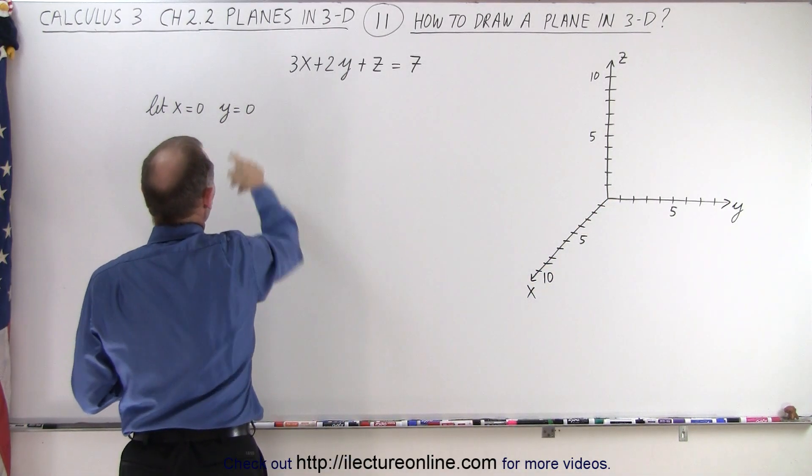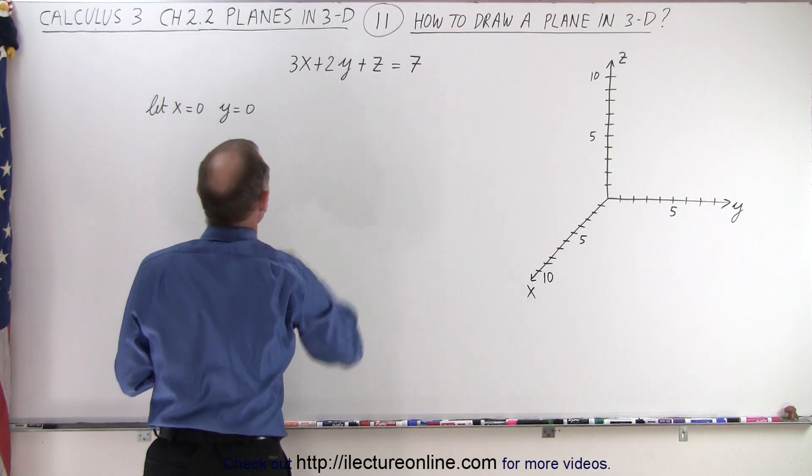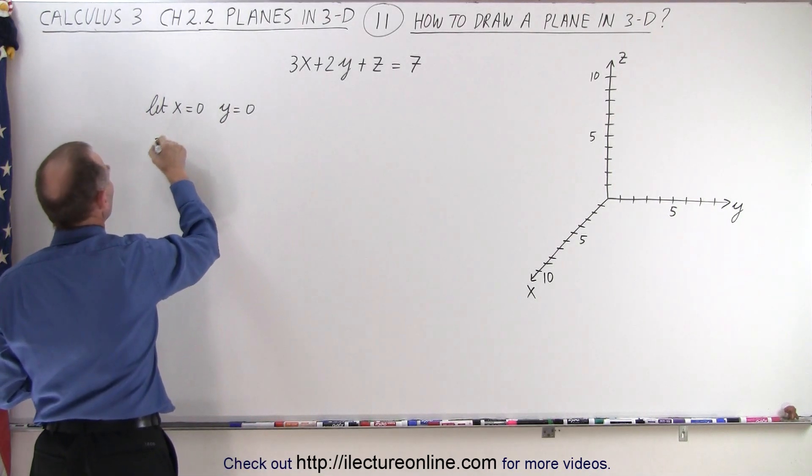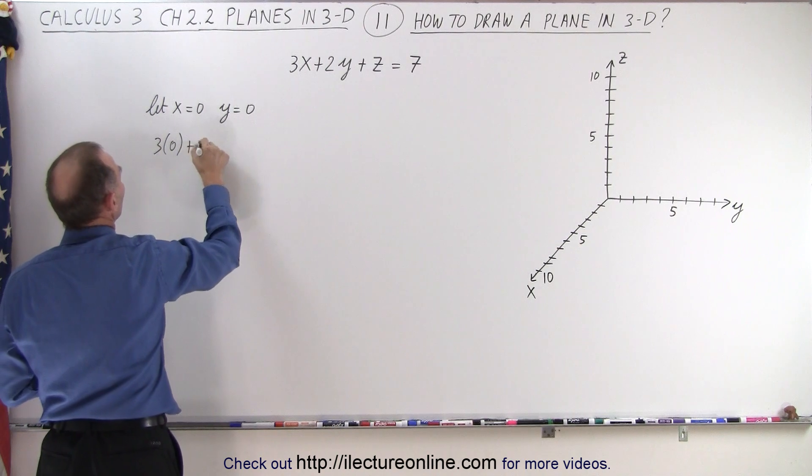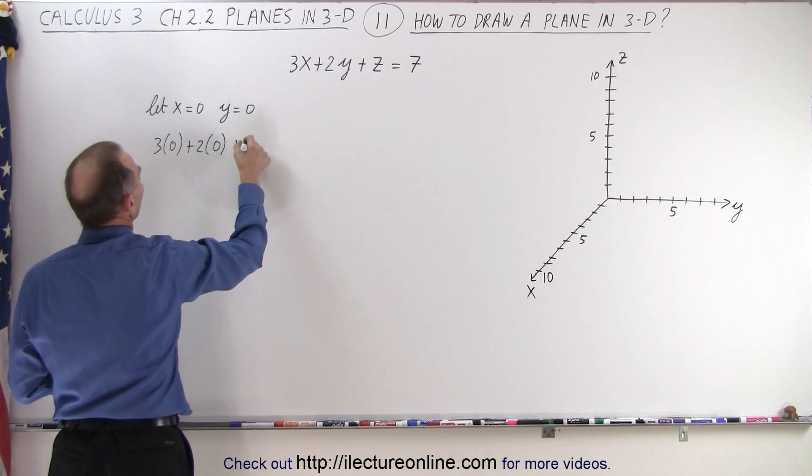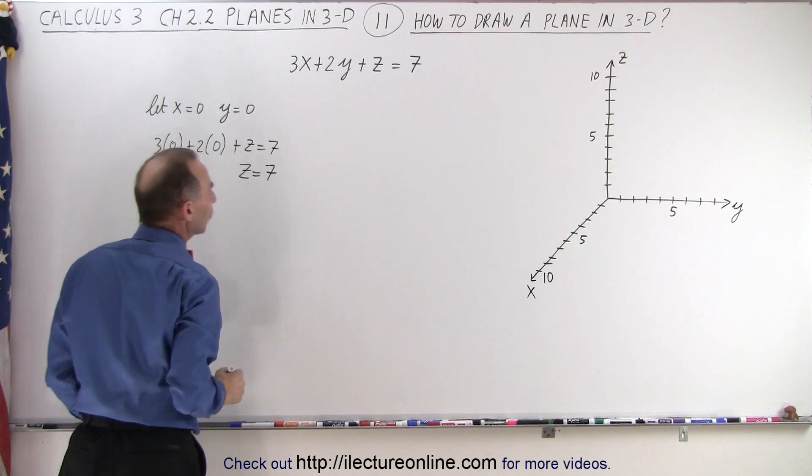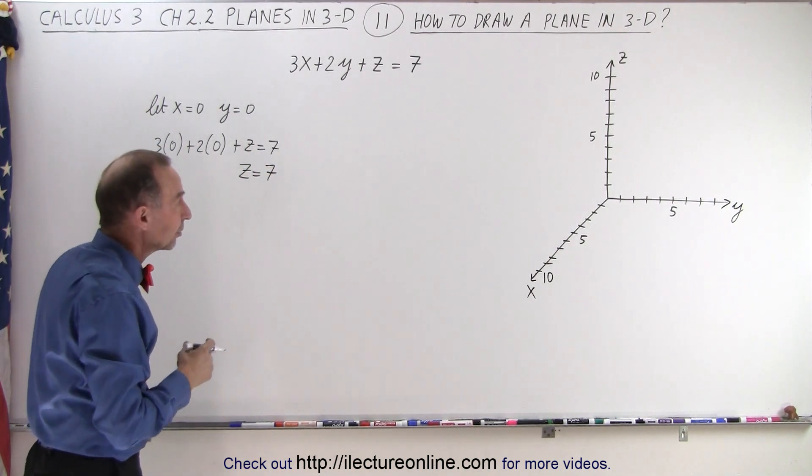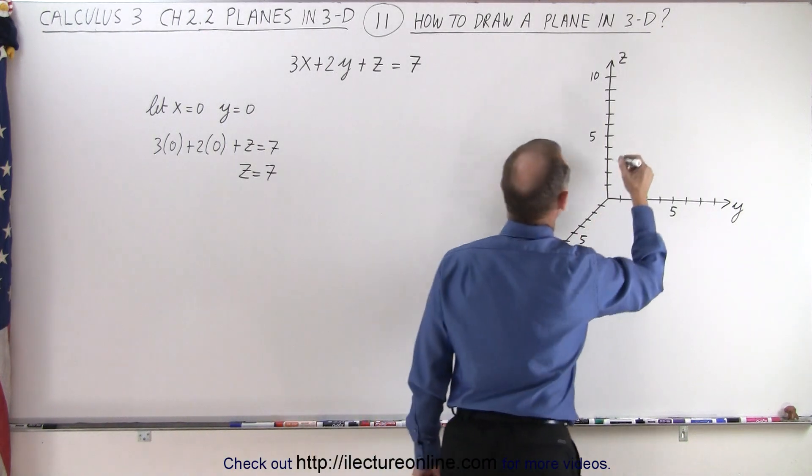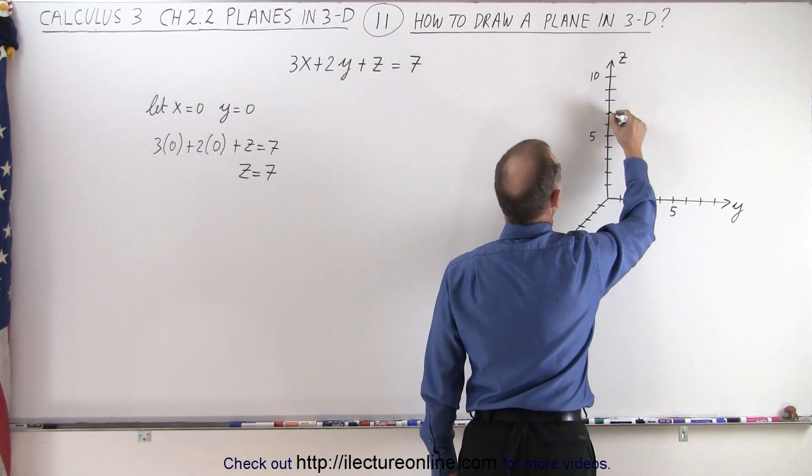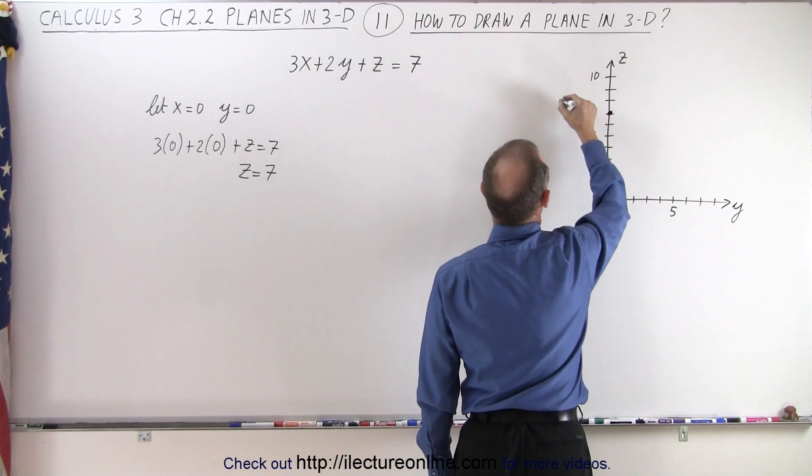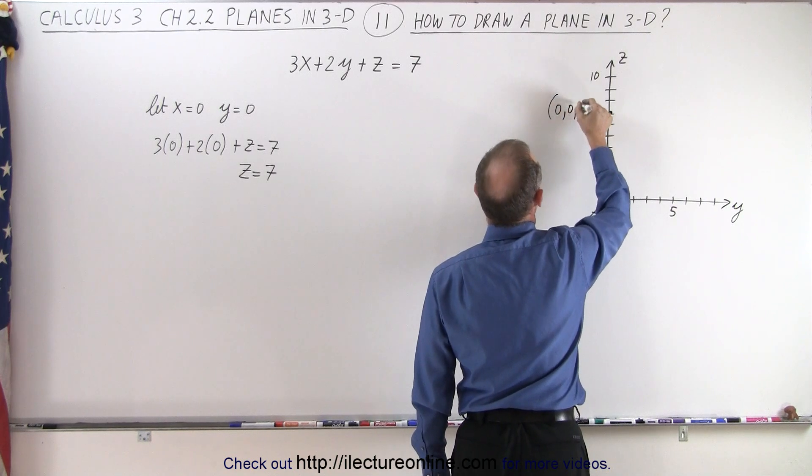So when we plug that into the equation, we get 3 times zero plus 2 times zero plus z equals seven, or simply z is equal to seven. So when x and y are equal to zero, then z is equal to seven. So that's on the z-axis right there. So that's the point zero, zero, seven.